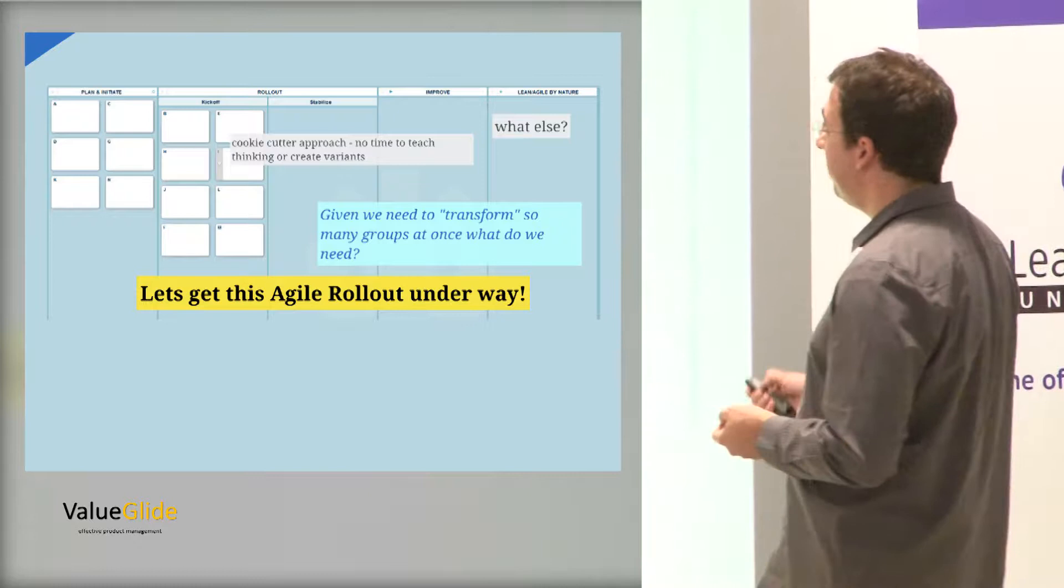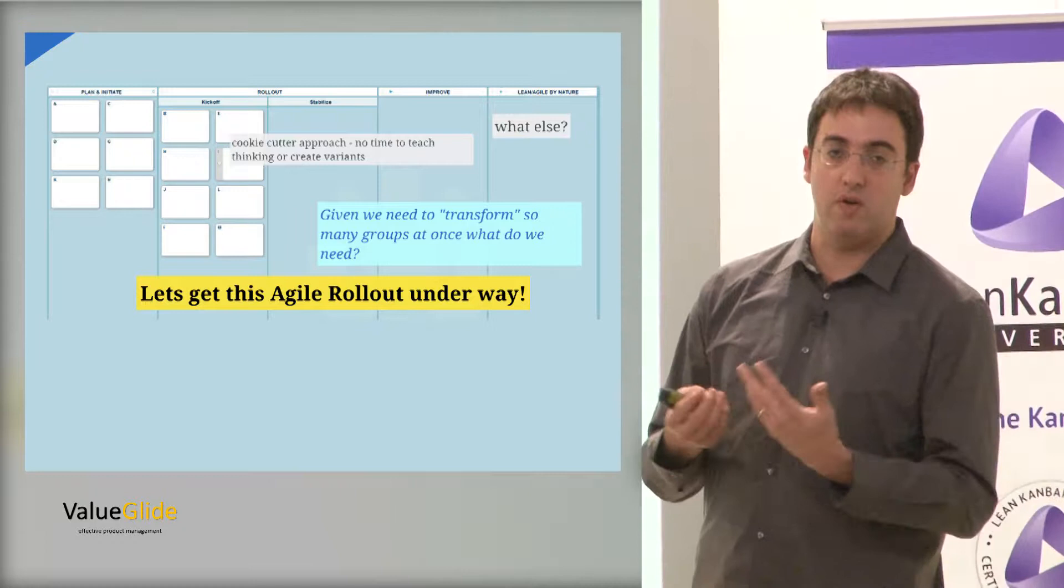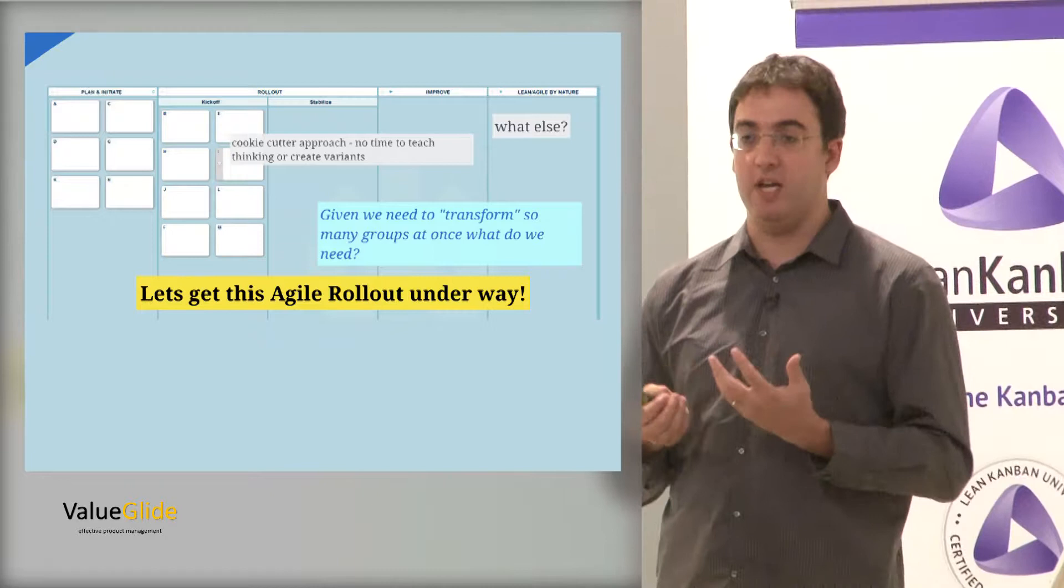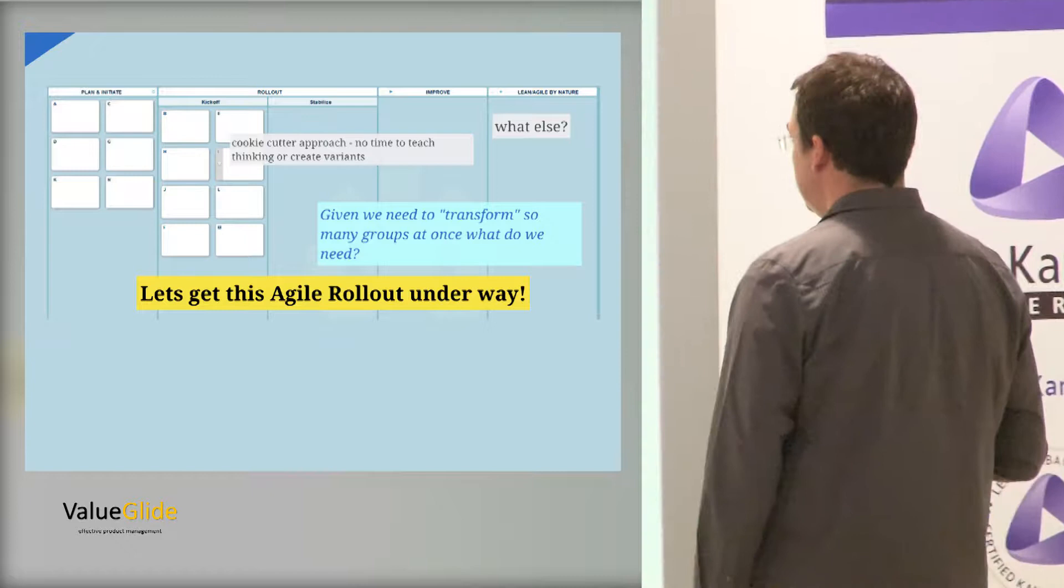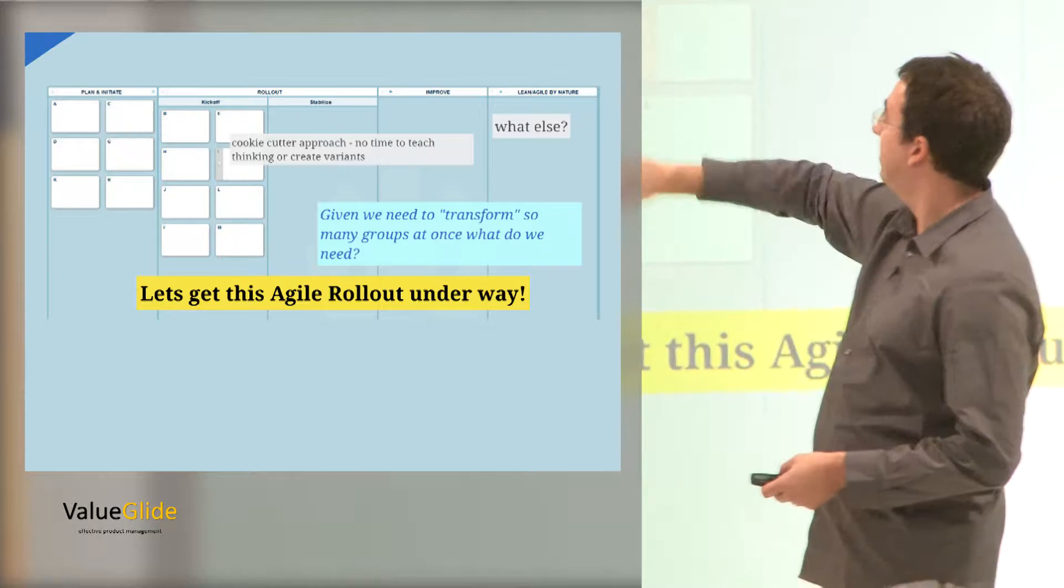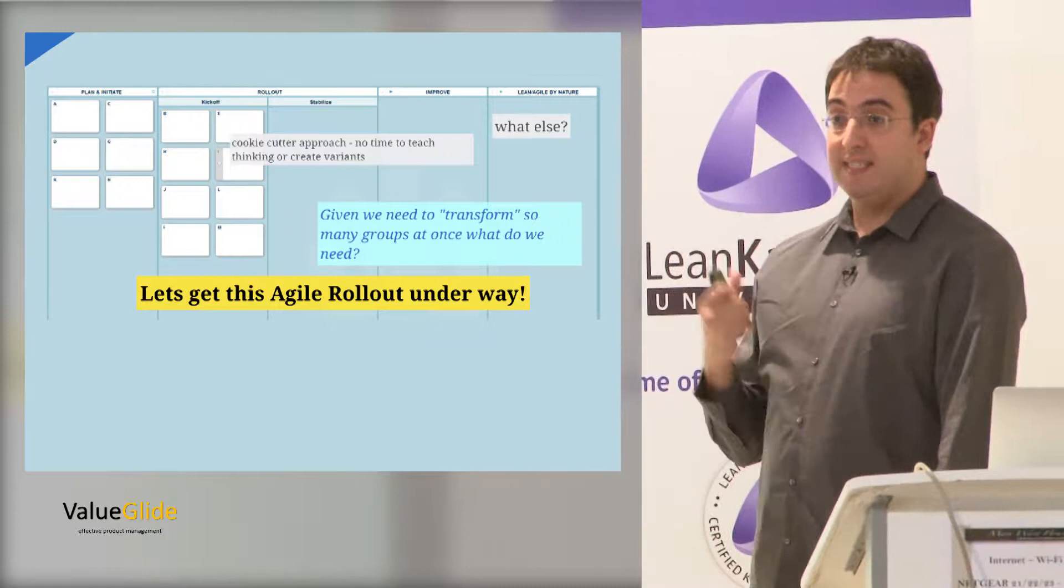And after that, you go and improve it further. You use the adaptive capability that you created in your organization to get more and more improved results. This is the life cycle of Agile kind of change that we're seeing in many places. But what we see here is that in this style, we do everything together. We take all of those groups and we tell them, go and plan how you want to be Agile. Go and start doing it together.